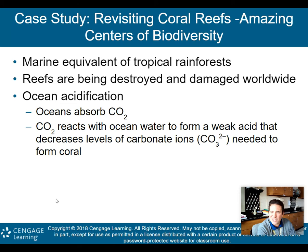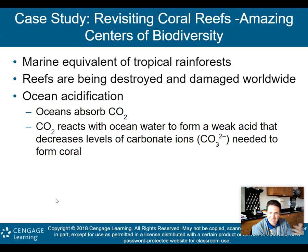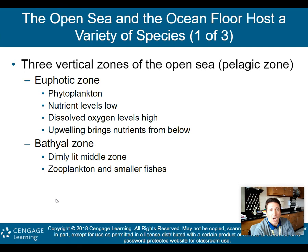Revisiting the coral reefs case study: coral reefs are the marine equivalent of tropical rainforests — up to 33% of the ocean's organisms rely on them for habitat, spawning areas, and more. Reefs are being destroyed and damaged worldwide through ocean acidification. Oceans absorb carbon dioxide, which reacts with ocean water to form a weak acid that decreases the levels of carbonate ions needed to form coral. More CO₂ in the air means more absorbed by the ocean, meaning less carbonate to form coral — which is why corals are dying out.